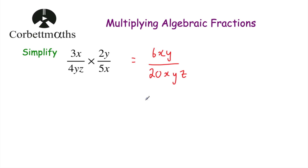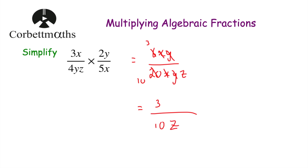Now we can cancel down. Six and twenty are both divisible by two, so divide both by two to get three on the numerator and ten on the denominator. In terms of the x's, we can divide both numerator and denominator by x so they cancel out. We can divide both by y so they cancel out, and we're left with a z on the denominator. So the answer is three over ten z. So if given 3x over 4yz multiplied by 2y over 5x, the answer is three over ten z.